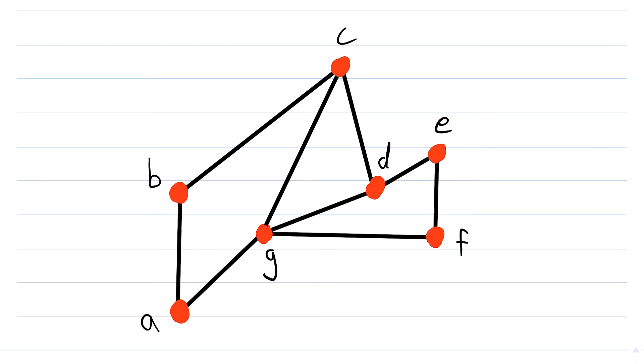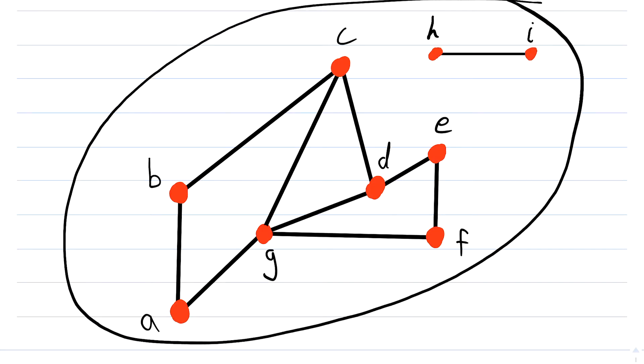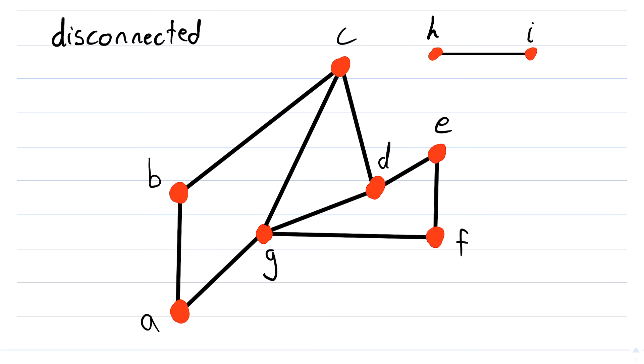Now what if we wanted to look at a graph that is not connected? Well, let's add a little bit more to this graph so that we have an example. There's an edge, we'll give it a vertex on either side, of course, like any good edge has, and we will label these vertices h and i. Now this graph is no longer connected. So we say that it is disconnected. Pretty predictable terminology.